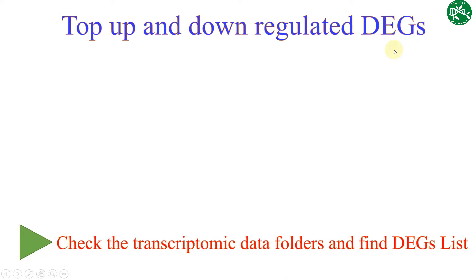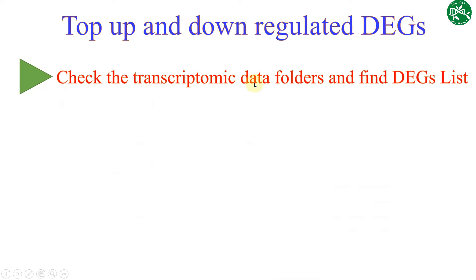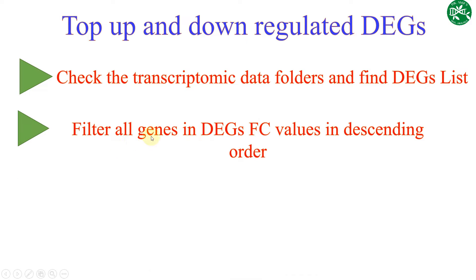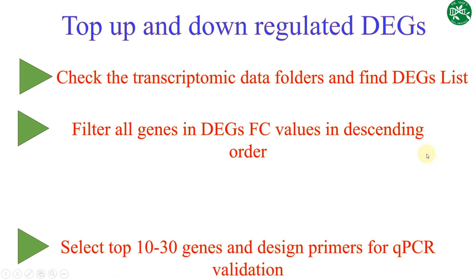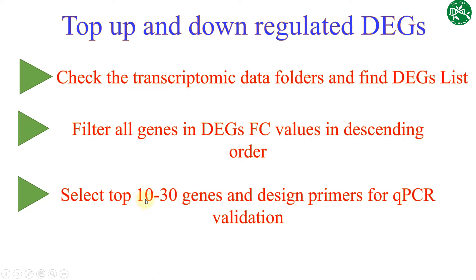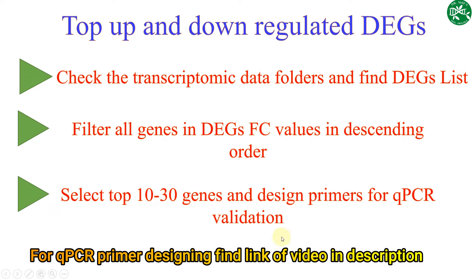For selecting top up and down regulated DEGs, in the first step you have to check all your transcriptomic data folders and scroll to find your DEGs list — specifically the one which shows the significant DEGs. In the second step, filter all the genes by DEGs FC value in descending order. In the third step, select your top 10 to 30 genes and design primers for qPCR validation.